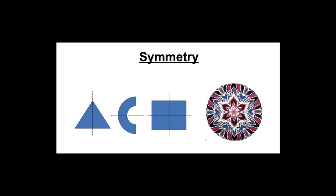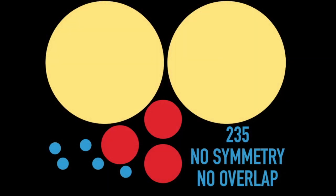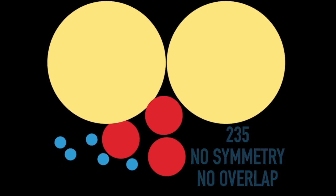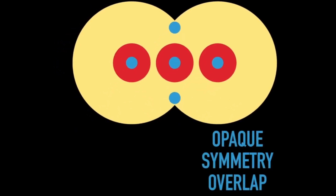Symmetry is the quality of being made up of the same parts facing each other, as you see in the first three shapes, or around a center point, as in the last example. In this example of 235, the yellows are hundreds, the reds are tens, and the blues are ones. It isn't a particularly interesting composition — there's no symmetry and also no overlap, where one shape covers another. This example shows opaque shapes, ones that you can't see through, and also horizontal and vertical symmetry. We are also covering one shape with another — that's using overlap.